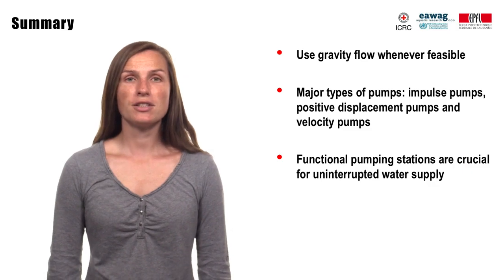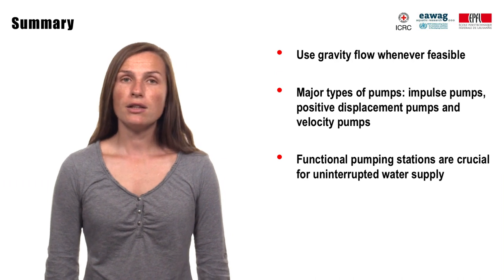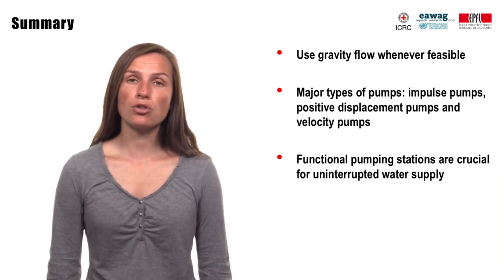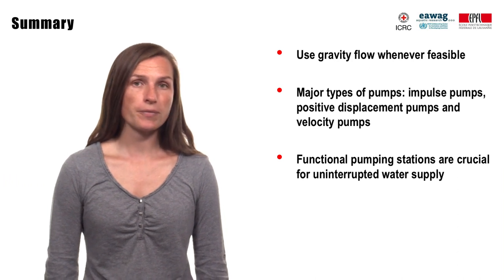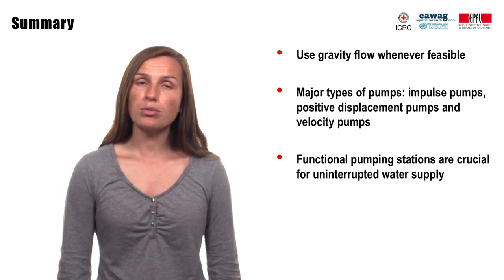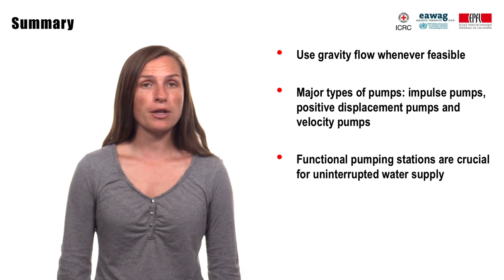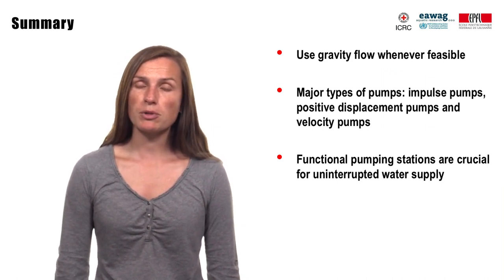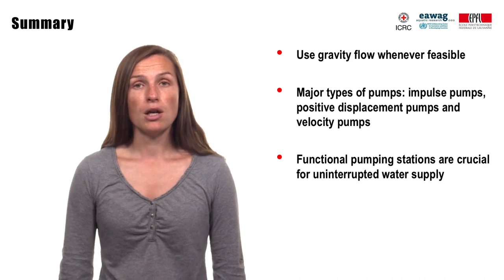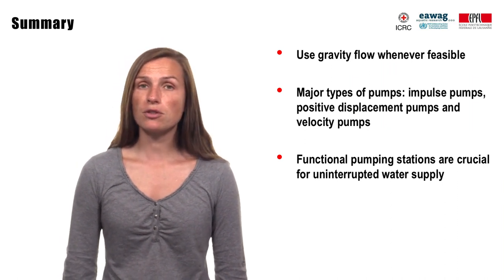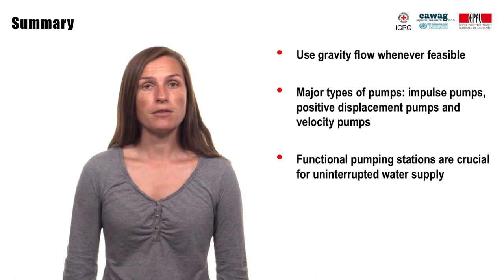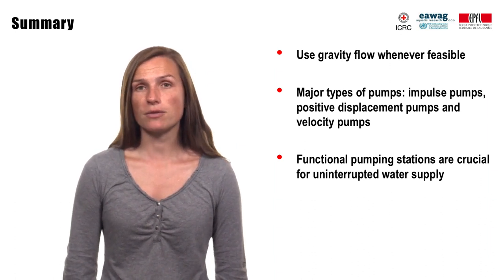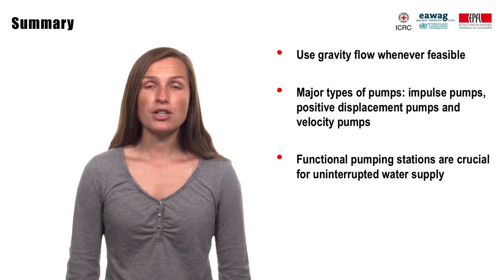During this lecture we discussed gravity water supply and learned that gravity supplies in hilly areas are usually systems which do not require a high degree of maintenance. Furthermore, we looked at the basic operating principles and differences of various common types of pumps, such as impulse pumps, positive displacement pumps, and velocity pumps. We learned how to read pump curves of centrifugal pumps. Finally, we mentioned major factors needed for reliable operation of a pumping station. See you during the next lecture!